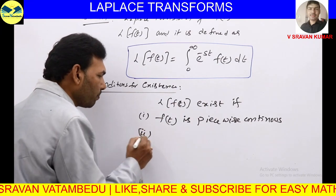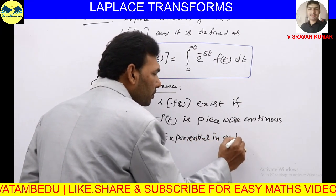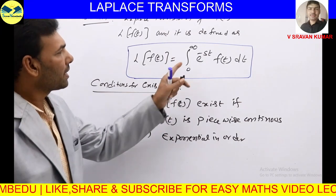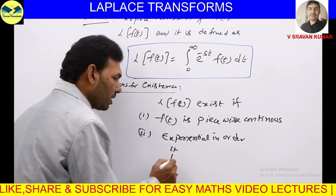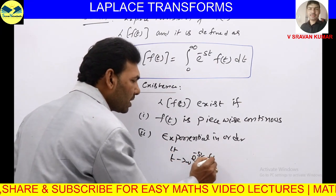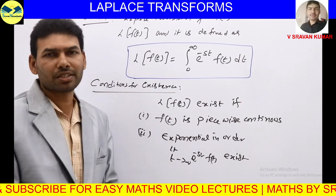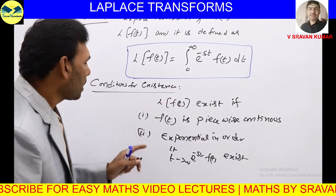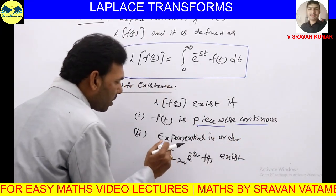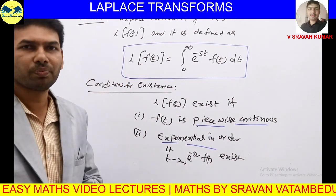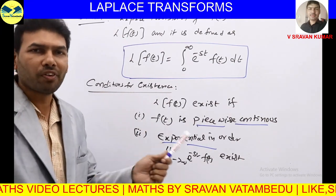Second, F(t) should be of exponential order. Exponential order means that as t tends to infinity, e^(−st) · F(t) should exist. If this does not exist, the integrand won't exist and we cannot evaluate it. Only for a function which satisfies both of these conditions can we find the Laplace transform. These are the two necessary conditions for the Laplace transform of a given function to exist.